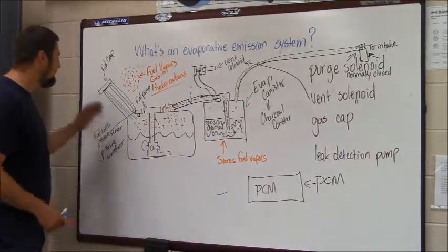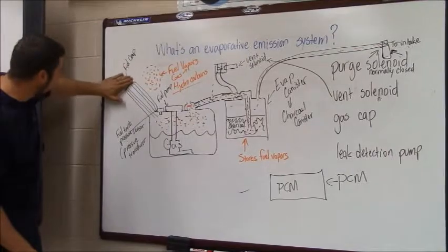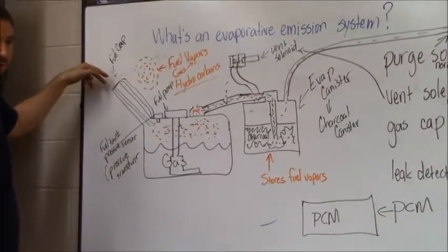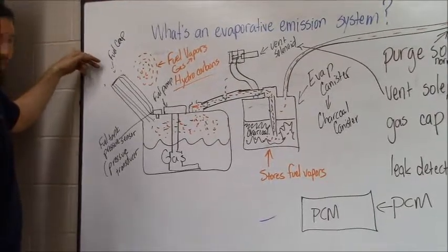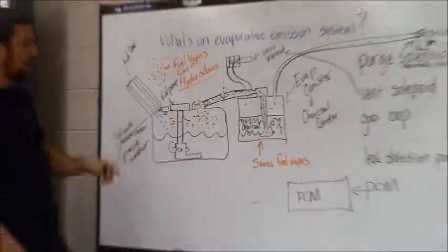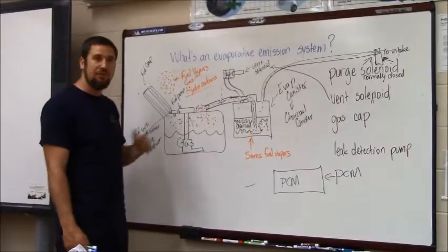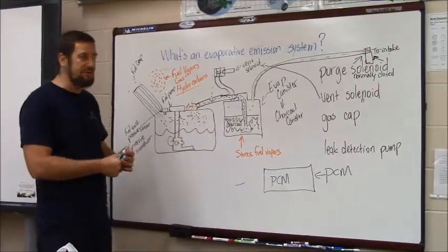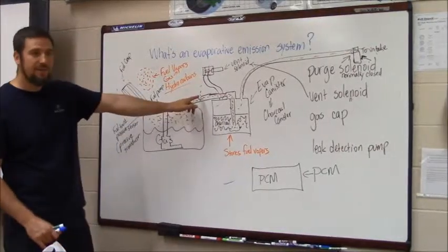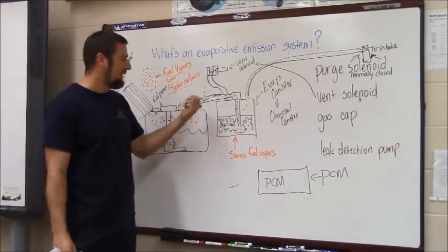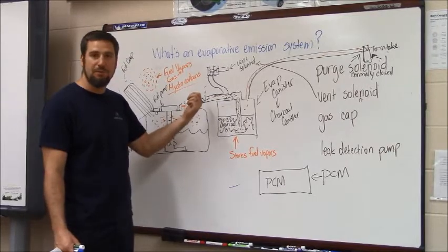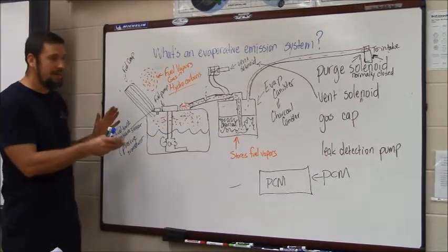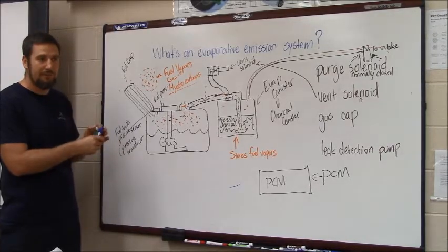If someone at the gas station leaves the cap off, you have a roughly one-and-a-half to two-inch diameter hole and the system will never achieve the target vacuum, so it sets a large leak code. With a tiny hole, the system may achieve that vacuum but can't hold it, and it may set a small leak evap code. That's one way all manufacturers monitor evaporative systems.